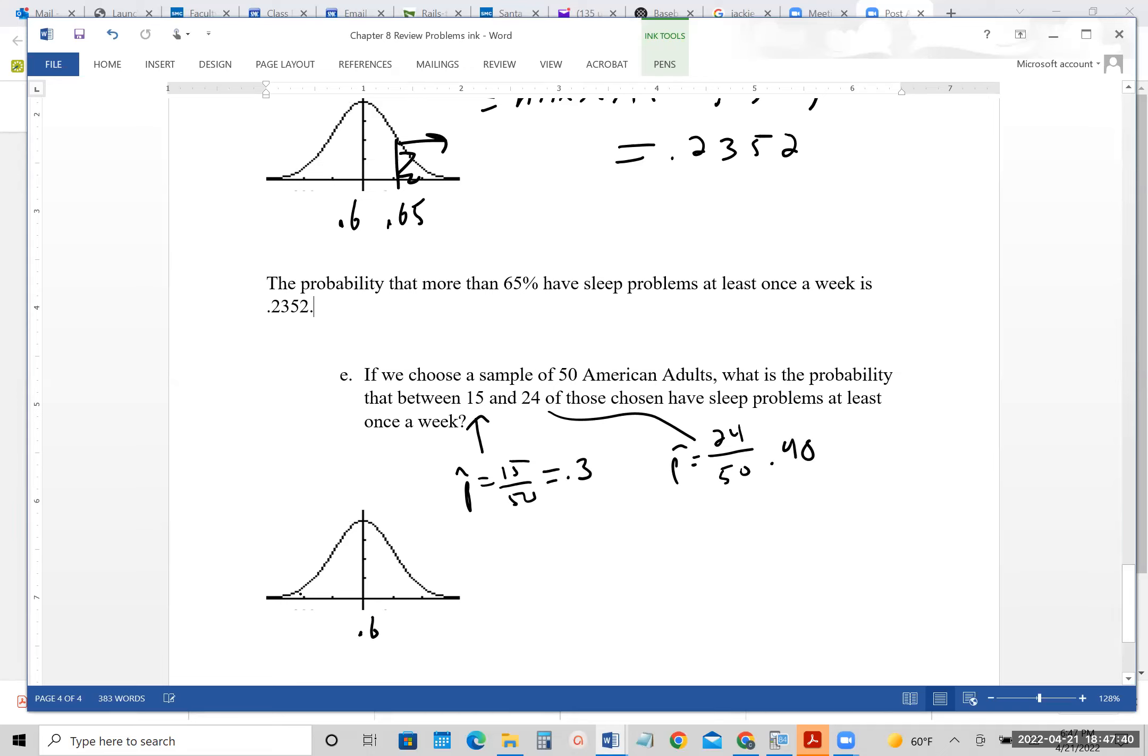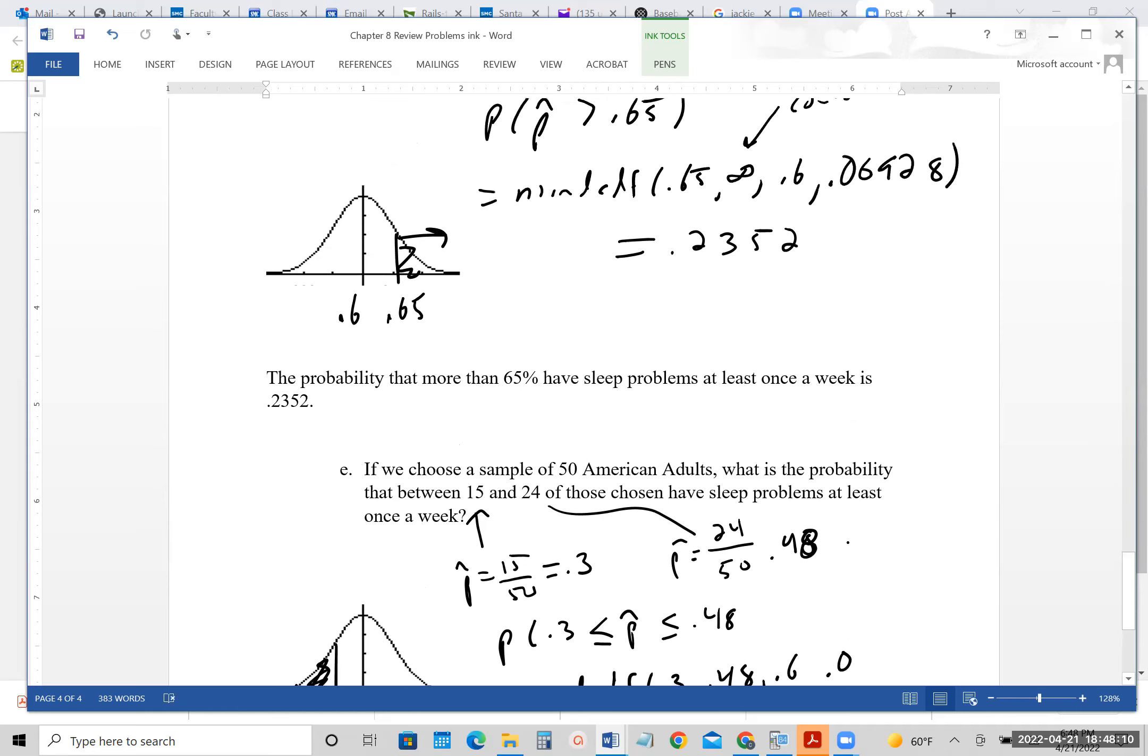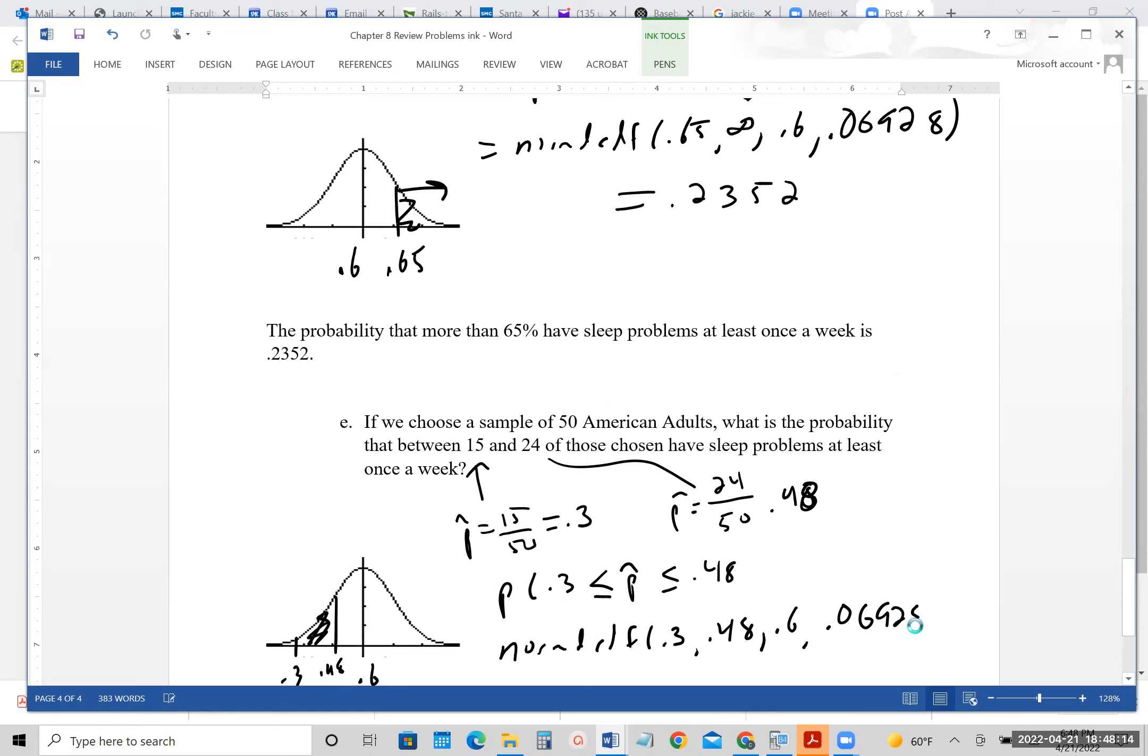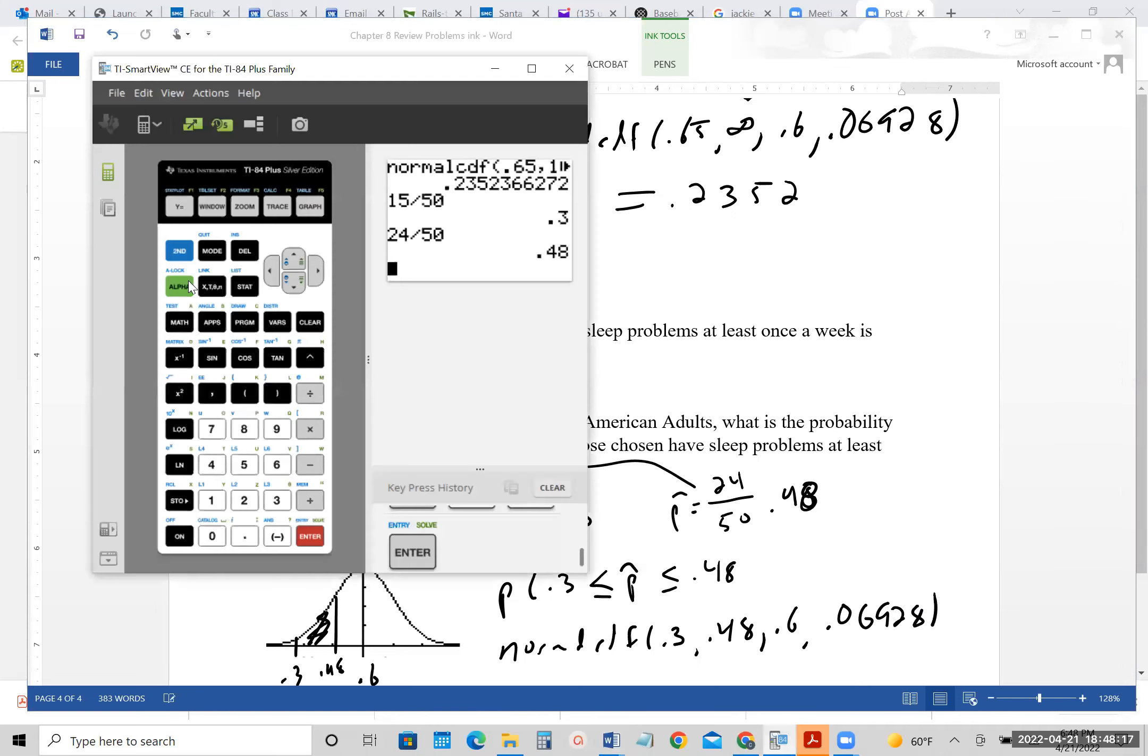So we have a 0.3 and a 0.48. So again, 0.6 is in the middle. So 0.3 is going to be somewhere over here. 0.48 will be somewhere there. So we don't even have to consider the infinity, which technically doesn't make logical sense to use an infinity for any of these, but we've been doing it and it works fine. So the probability between 0.3 less than or equal to P hat less than or equal to 0.48 would be normal CDF 0.3 comma 0.48 comma 0.6 comma 0.06928. We'll go here. And so second VARs, let's go down to here and we'll do 0.3, 0.48. And then the rest can stay the same. And we get 0.0416.